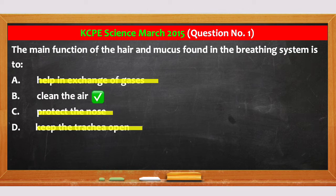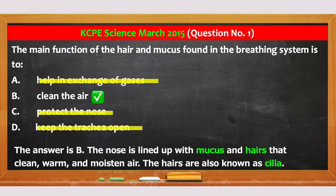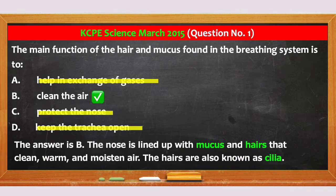The answer is B. The nose is lined with mucus and hairs that clean, warm, and moisten air. The hairs are also known as cilia.